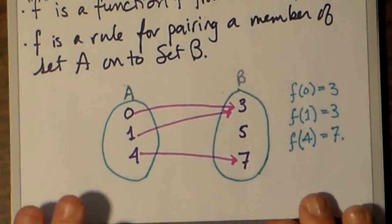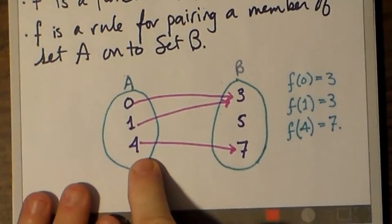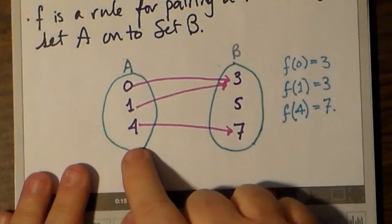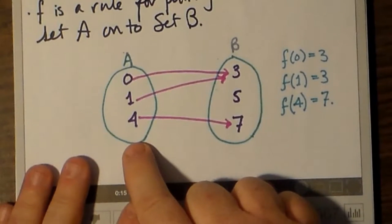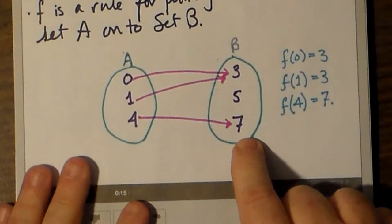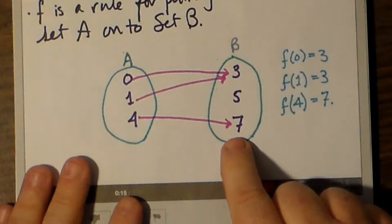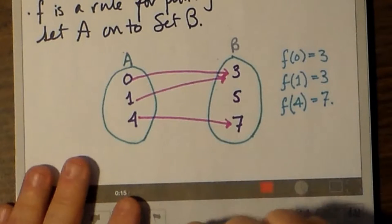In this illustration, f of 0 is 3, f of 1 is 3, and f of 4 is 7. Or 0 is mapped into 3, 1 is mapped into 3, and 4 is mapped into 7. Notice here that nothing is mapped into 5.